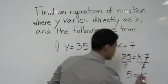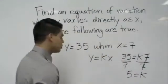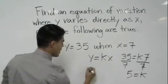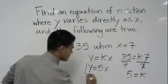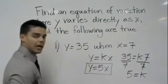So now my K is equal to 5, so I go ahead and substitute that back in. So I actually have Y is equal to 5X and that's the direct variation.